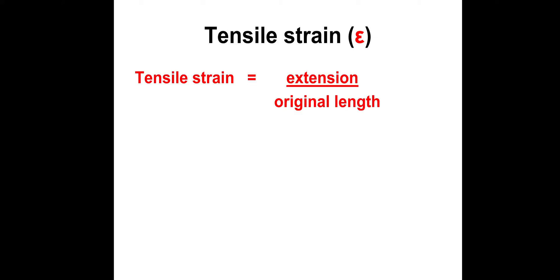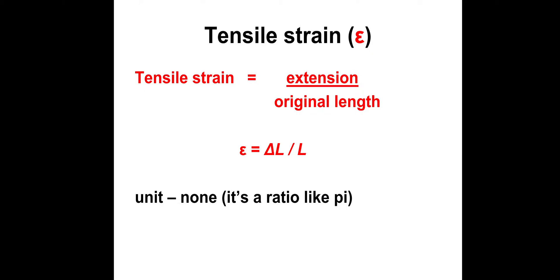The other equation is tensile strain. Strain is extension divided by the original length. Strain, which we denote as epsilon, is equal to change in length over original length, and there's no unit — it's a ratio. If you divide extension by original length it gives you a decimal value. You can turn it into a percentage change by multiplying by 100. In some questions they give you the percentage change and you have to convert it back into a decimal to use in an equation, so be mindful of that.